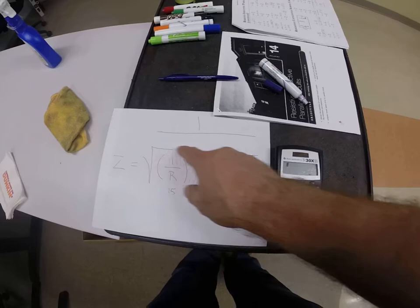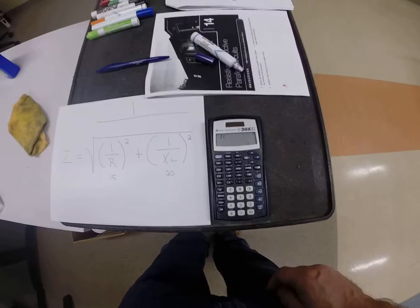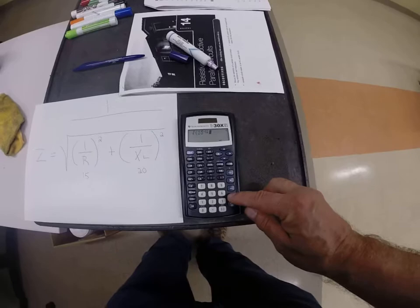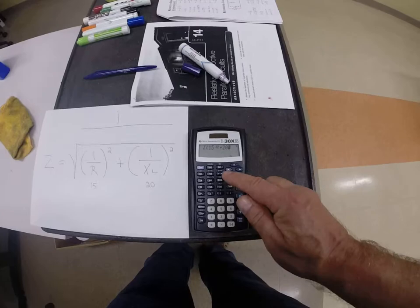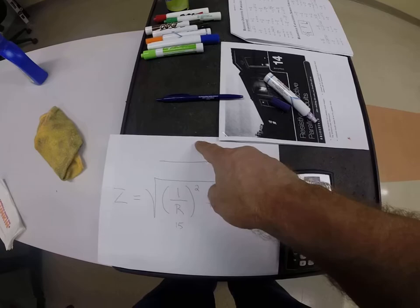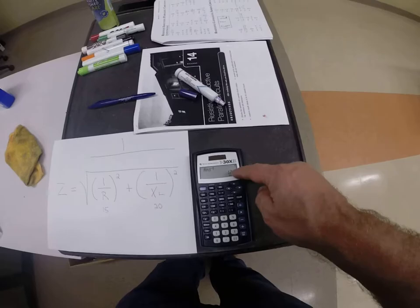I have to bring up the square root bracket first. So, hit second, square. Now, I'm going to enter 15. I'm going to reciprocal it before I square it. Then, I'm going to hit plus 20. Reciprocal square. Equals. This is not our number, because now we have to reciprocal it one last time. Equals. And that's our number, 12.